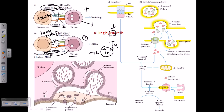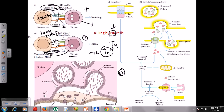The killing mechanism involves receptor-mediated signaling. When the AR–AR ligand interaction is confirmed, Fas ligand interactions occur between the NK cell and the infected cell via Fas receptor and Fas ligand, bringing them very close together. Inside the NK cell cytoplasm, there are granules containing two important chemical mediators: granzyme and perforin.